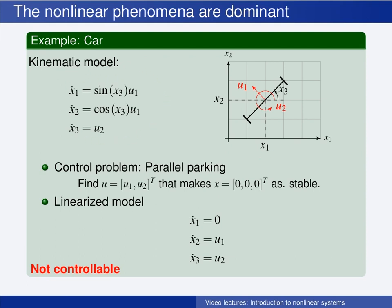X1 and X2 describe the position of the center point of the front axle, and X3 is the angle that the front axle is rotated with respect to the X1 axis. U1 is the forward velocity, and U2 is the angular velocity.